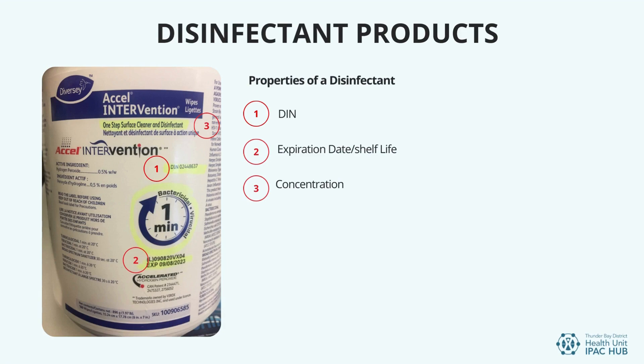Environmental disinfectants in healthcare are most commonly a chemical agent used to destroy or deactivate harmful microbes. Disinfectants have specific properties that everyone using them must be aware of — we are going to review those six properties. Number one, it must have a DIN — a drug identification number — provided by Health Canada, which designates it as an approved product. There is one exemption: sodium hypochlorite, also known as bleach, does not have a DIN but is an acceptable disinfectant. Number two, an expiration date or shelf life — it is important not to use these products past their date, as the concentration may have depleted to a level that is no longer effective.